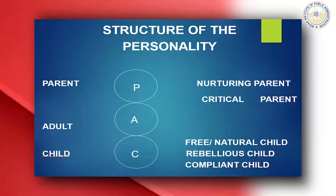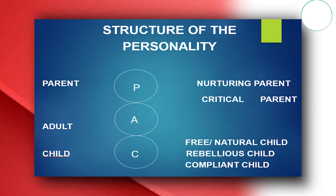Every human personality has three ego states. Ego states are a coherent system of feelings and behavioral patterns. A person manifests his or her behavior through a mixture of thoughts, feelings and behaviors. According to Eric Berne, a person interacts with three ego states: parent ego state, adult ego state, and child ego state. These ego states are largely shaped through our childhood experiences.